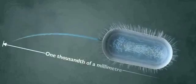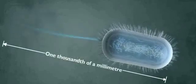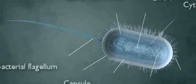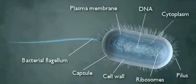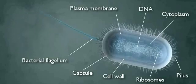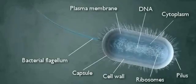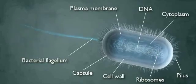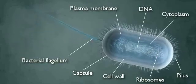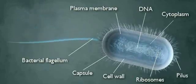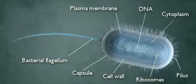Bacteria are approximately one thousandth of a millimeter in length. They are cells containing cytoplasm and a loop of genetic information, DNA, to control the cells' activities. The cells maintain their shape and prevent bursting, and at times have a flagellum for movement.